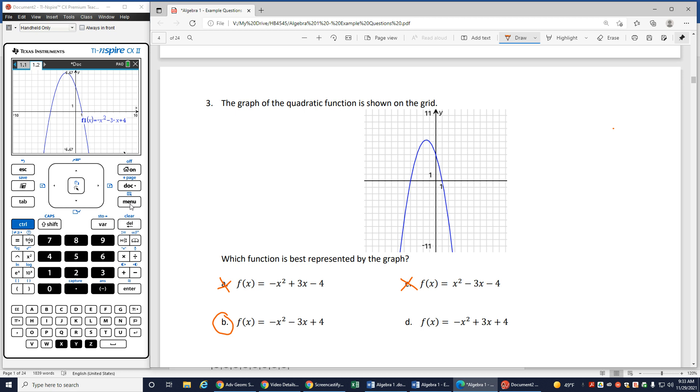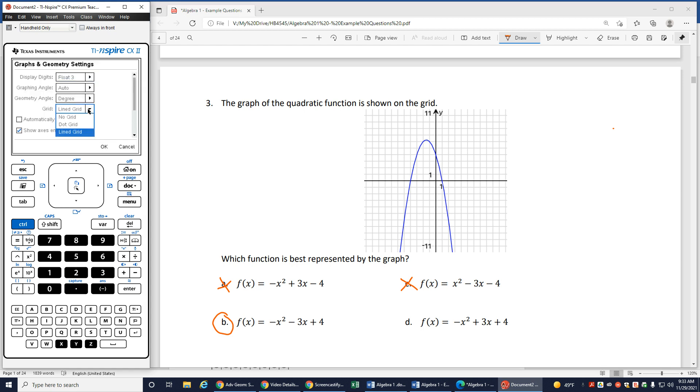Again, to turn the grid on and off from the menu, we go to settings. And right here on grid, you can turn your grid on and off. You can even do like a dotted grid. It looks like that if you want to do a dotted grid instead. Again, that was just under settings after you click menu to turn that grid on and off. Thank you so much for watching. If you have any questions, make sure you're checking with your teacher or your tutor.